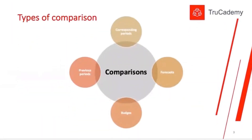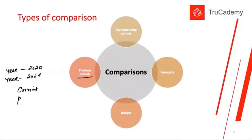There are different ways we can compare our information. First, with previous periods — for example, how was our performance in 2020 versus how is our performance in 2021. Comparing current performance with previous performance is called previous period comparison: current performance versus previous performance.